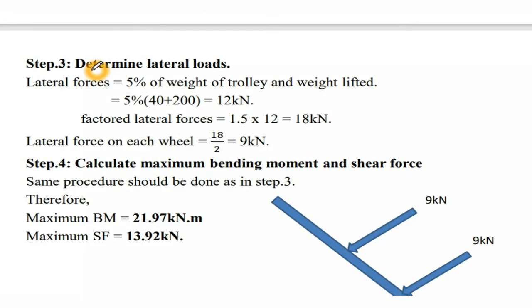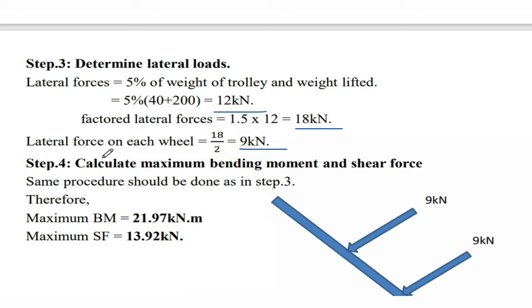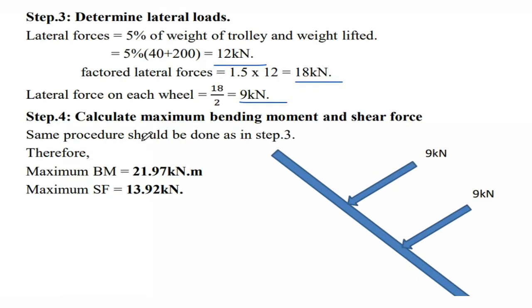Step 3: Determine lateral loads. Lateral force is 5% of (weight of trolley + weight lifted) = 5% of (40 + 200) = 12 kN. The factored lateral force is 18 kN. Lateral force on each wheel = 18 / 2 = 9 kN.